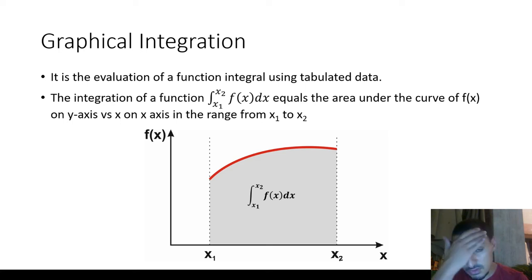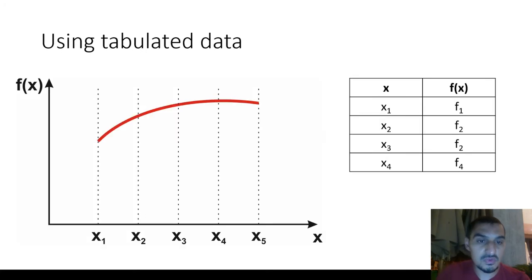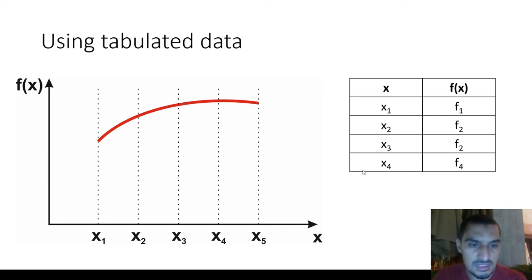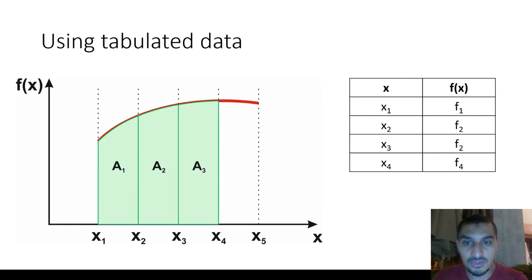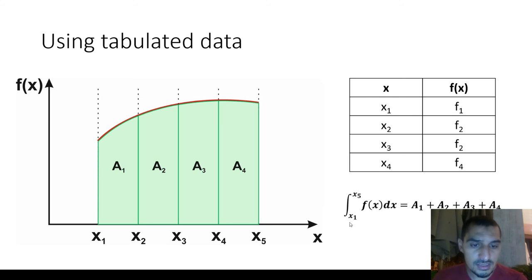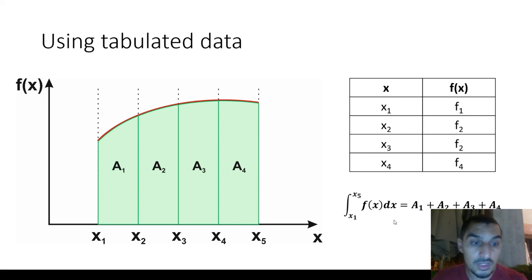There are many methods we can use to do these calculations. We have this curve and this data — there is a missing row for x5 and f5, but we've tabulated the data and drawn the curve. The integral is going to be the sum of A1, A2, A3, and A4, which is the integral of f(x) dx from x1 to x5. We have five data points and four areas, so the number of data points is one more than the number of areas.